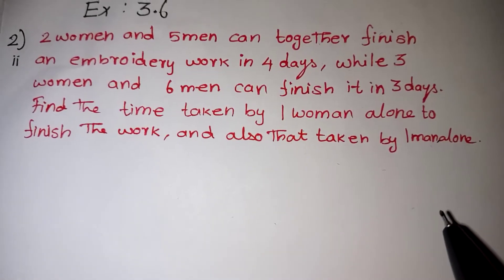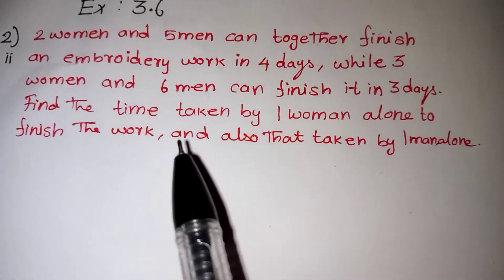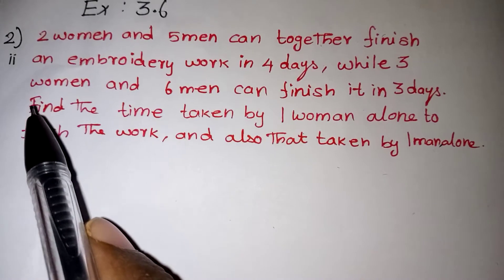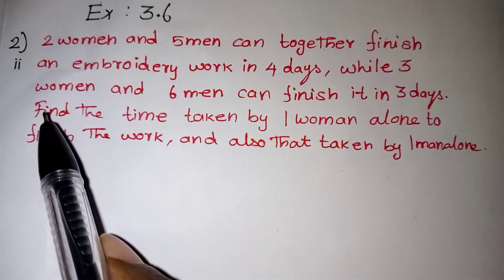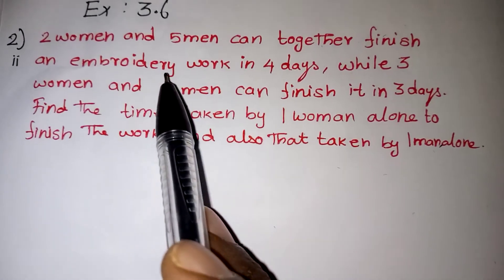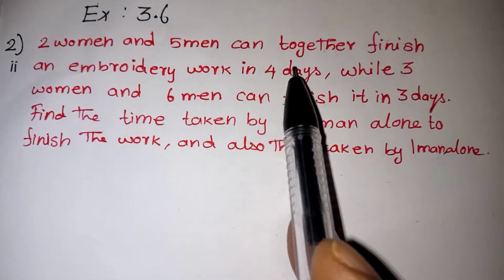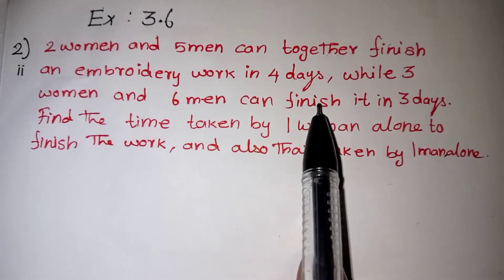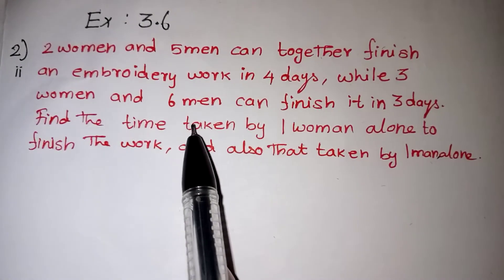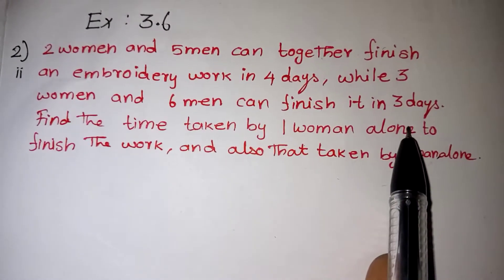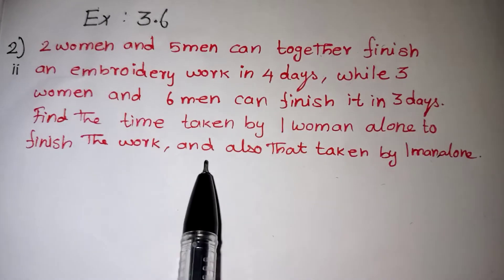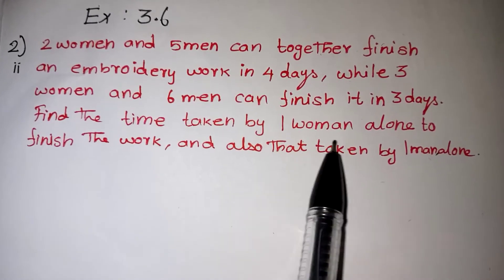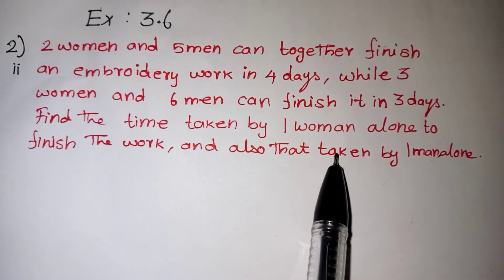Hi students, in this video we are going to learn exercise number 3.6, question number 2, second problem. Our question is: 2 women and 5 men can together finish an embroidery work in 4 days, while 3 women and 6 men can finish it in 3 days. Find the time taken by 1 man alone and 1 woman alone.